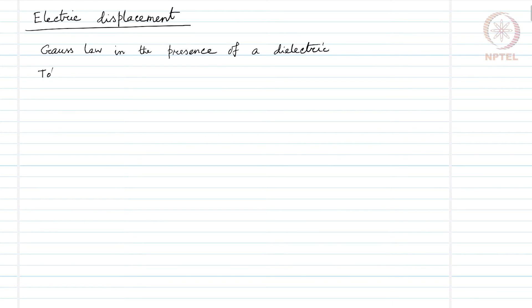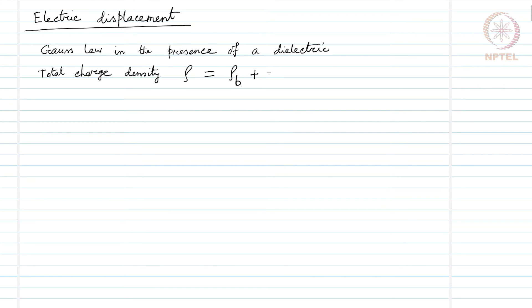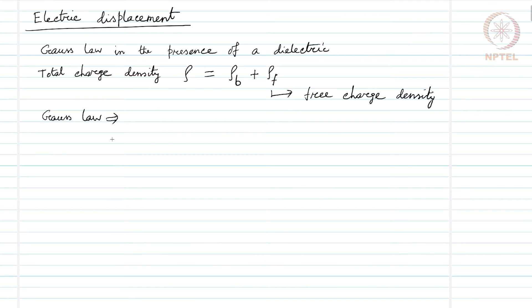The total charge density that we have now — we will talk about volume charge density because Gauss law in its differential form is applicable with volume charge density. So, the total volume charge density rho can be expressed as the bound charge density plus the free charge density with subscript f. Then, Gauss law gives us epsilon naught times divergence of the electric field equals the total volume charge density, that is rho_b plus rho_f.